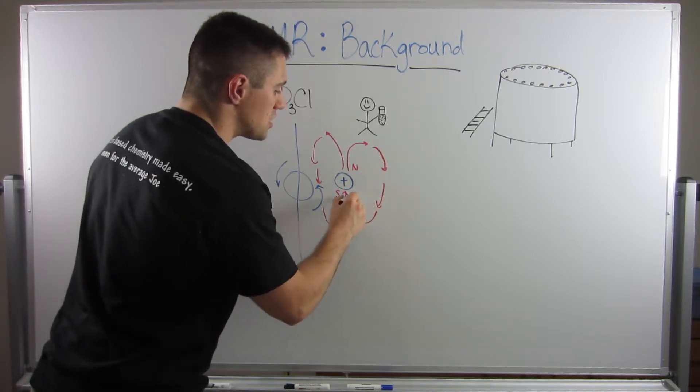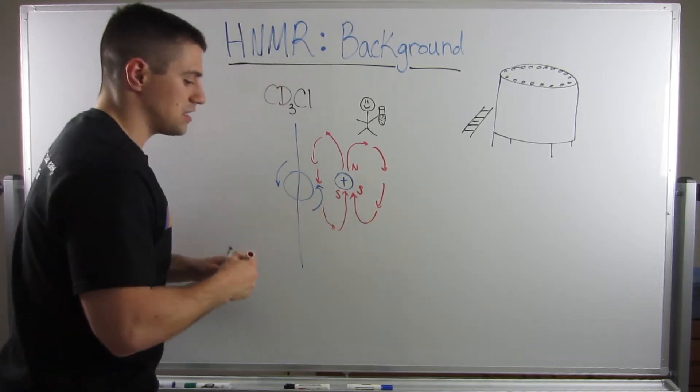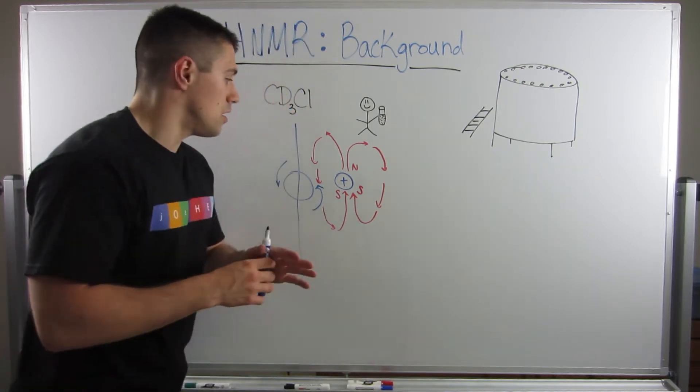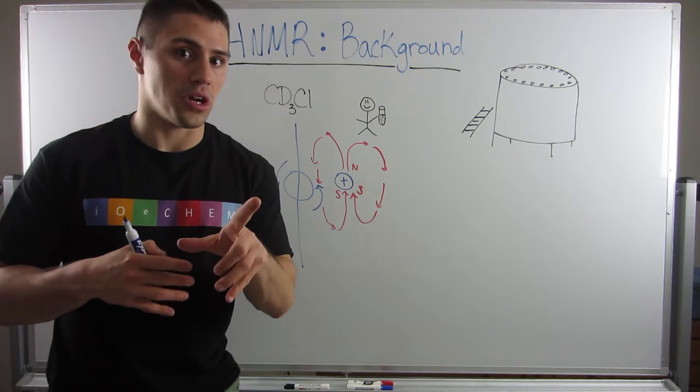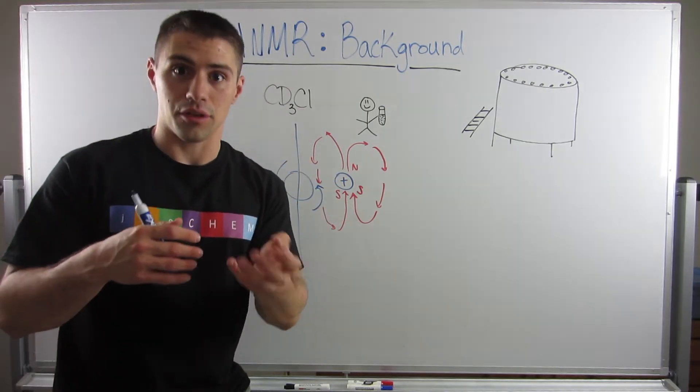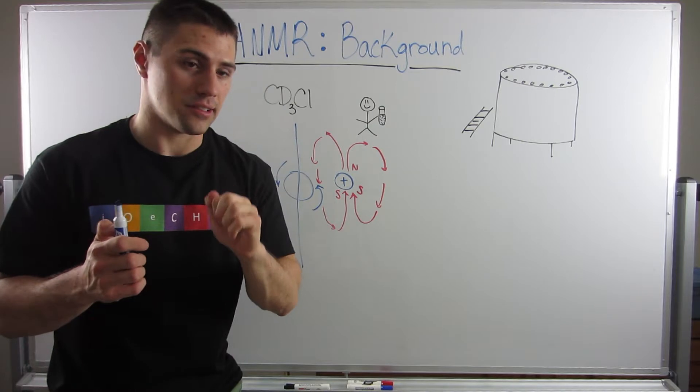Now, this is the bit of physics that's a little bit crazy to understand. But just know, nuclei spin, hydrogen nuclei spin, there's one proton. Because of that, they generate their own magnetic field. So they look like tiny little bar magnets.